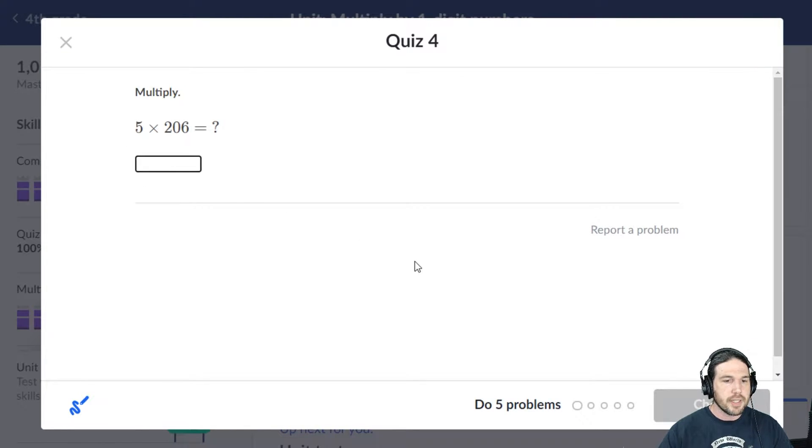5 times 206. Well, 5 times 200 is 1000, and 5 times 6 is 30. 1000 plus 30 is 1030.